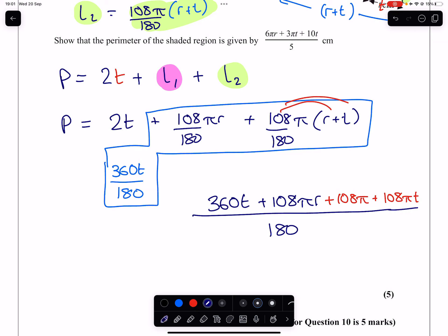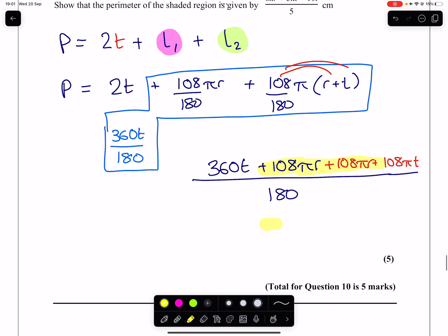Collecting like terms, I missed out an R here. Collecting like terms, these two in the middle are going to mix to become 216. So 216πR. We've got our 360T at the start. We've got a 108πT at the end. And it's all over 180.